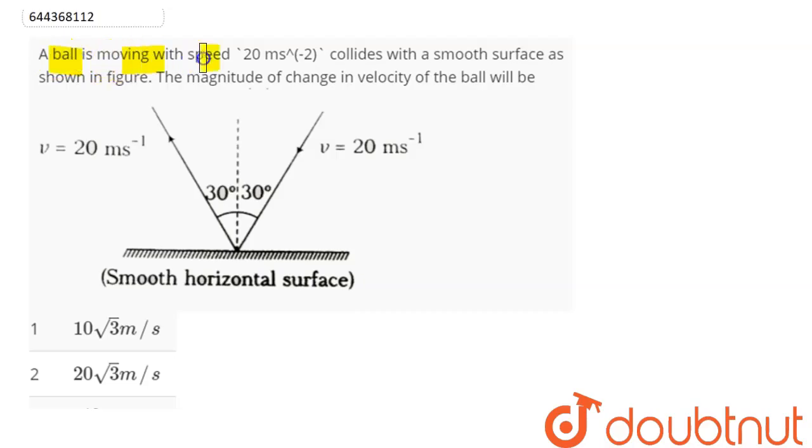Question is: a ball is moving with a speed of 20 meter per second collides with a smooth surface as shown in the figure. Magnitude of change in velocity of the ball will be.